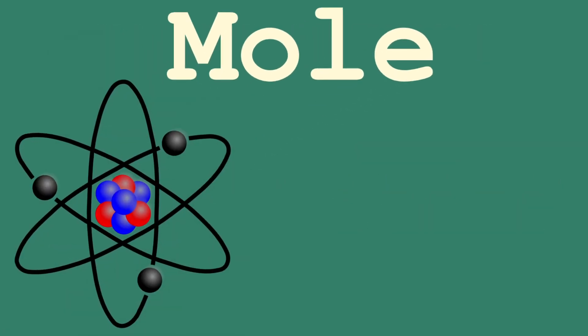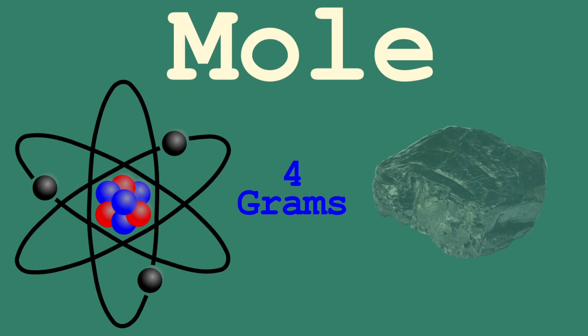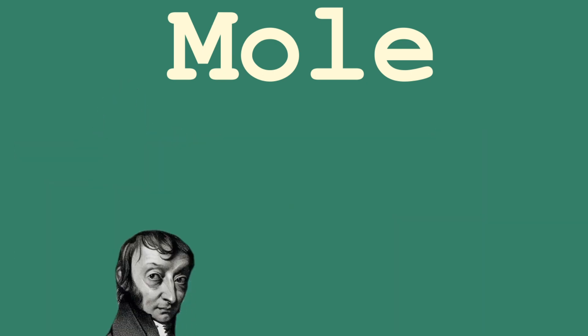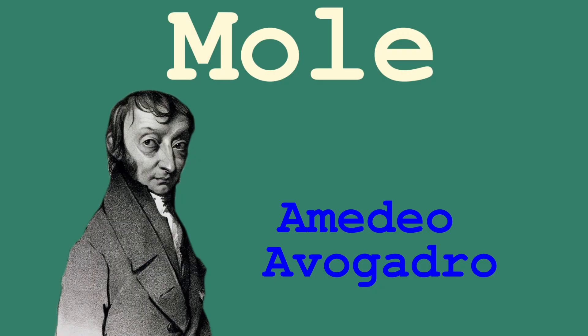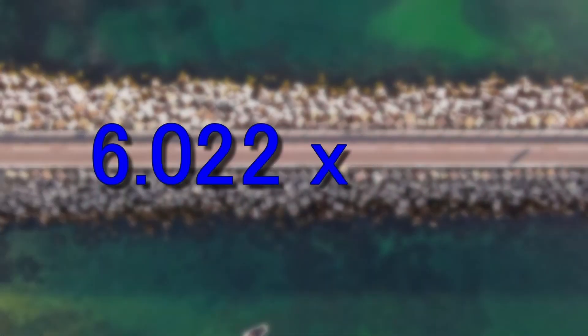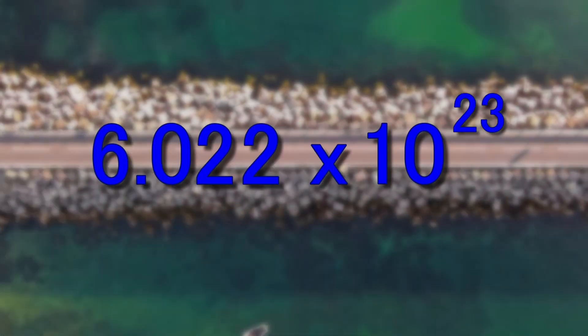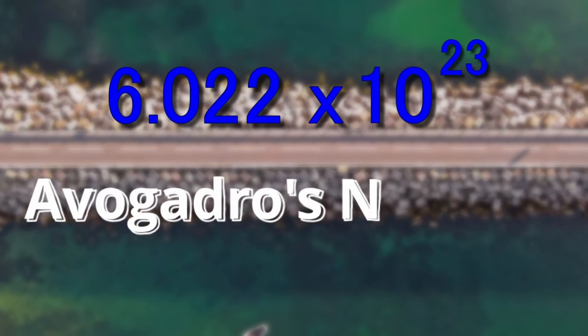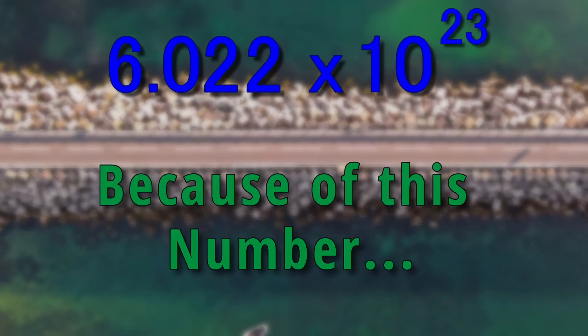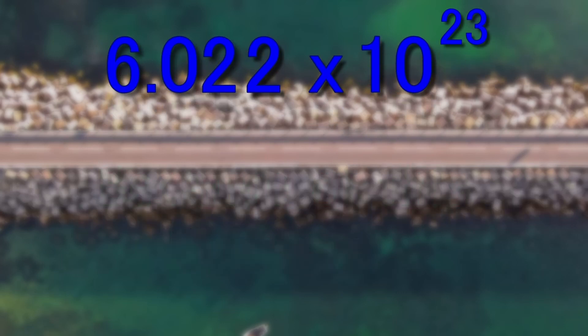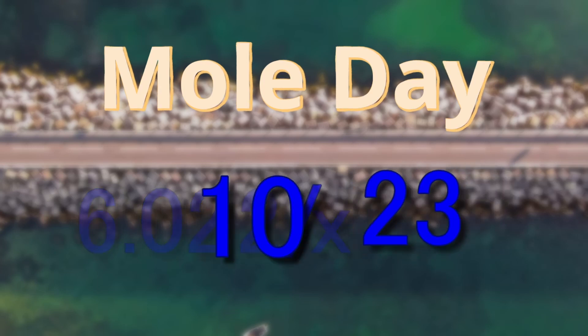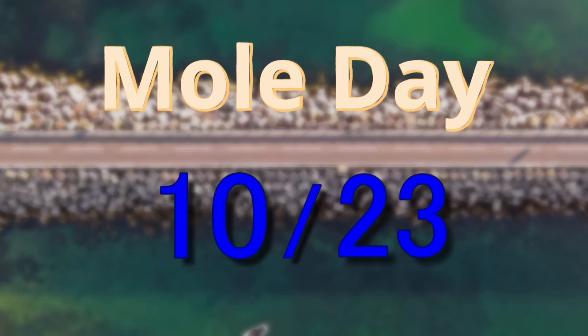This number, originally based on the amount of atoms in 12 grams of carbon-12, was determined by Italian physicist Amadeo Avogadro to be 6.022 times 10 to the 23rd, giving it the name Avogadro's number. Because of this number, Mole Day is celebrated on October the 23rd starting at 6.02 a.m.